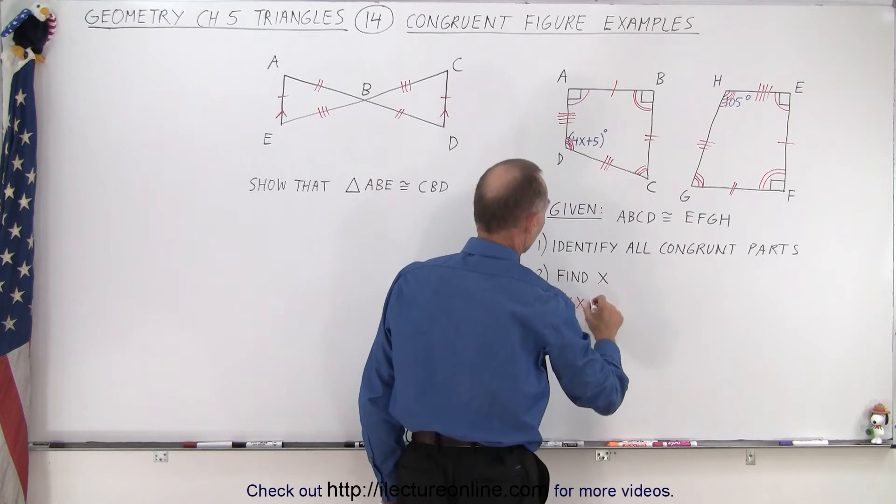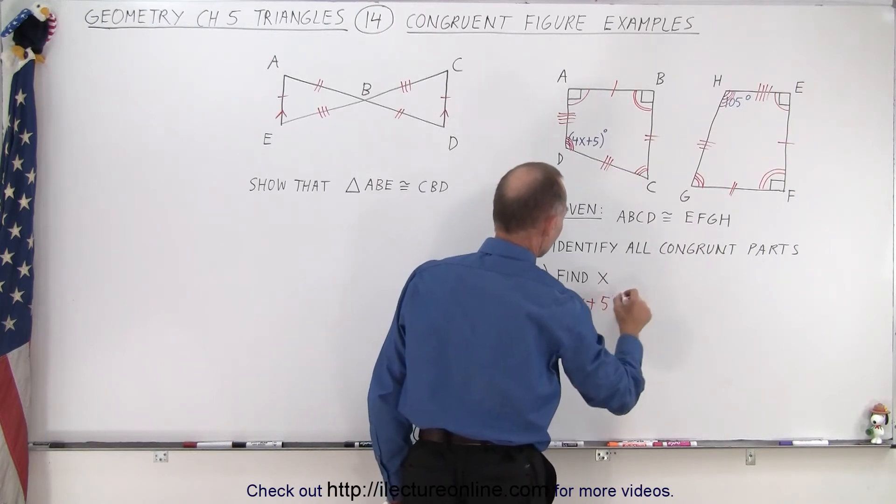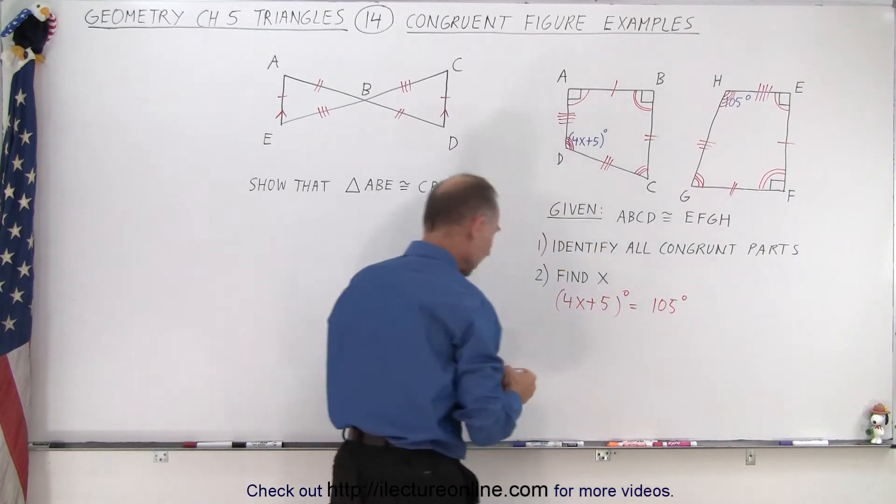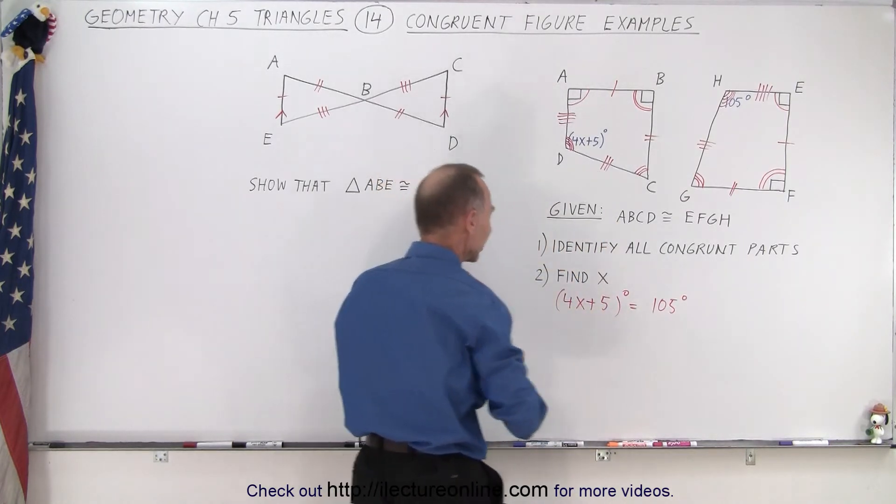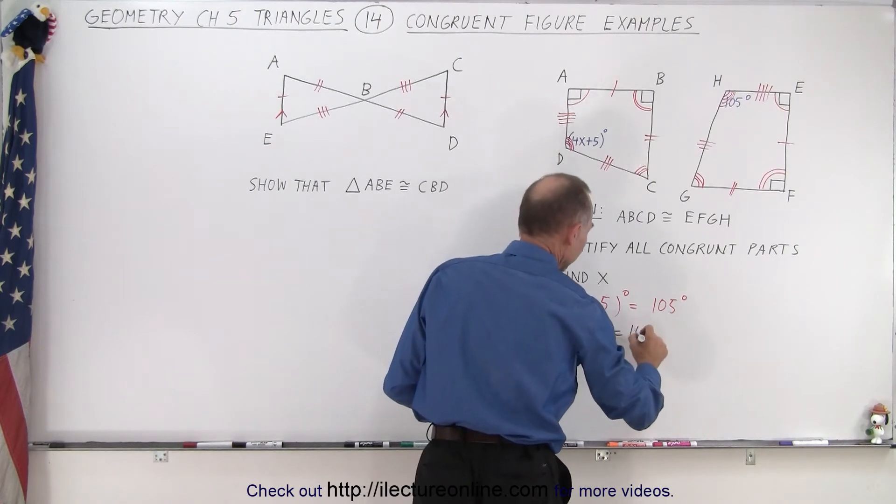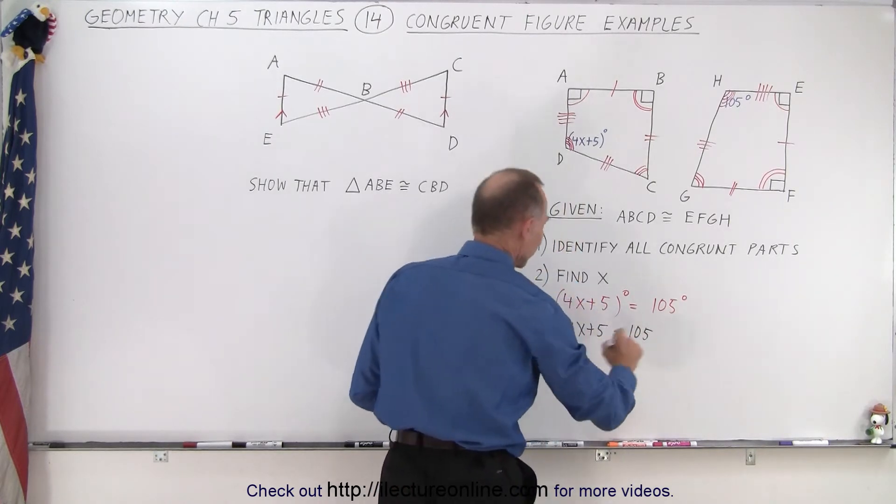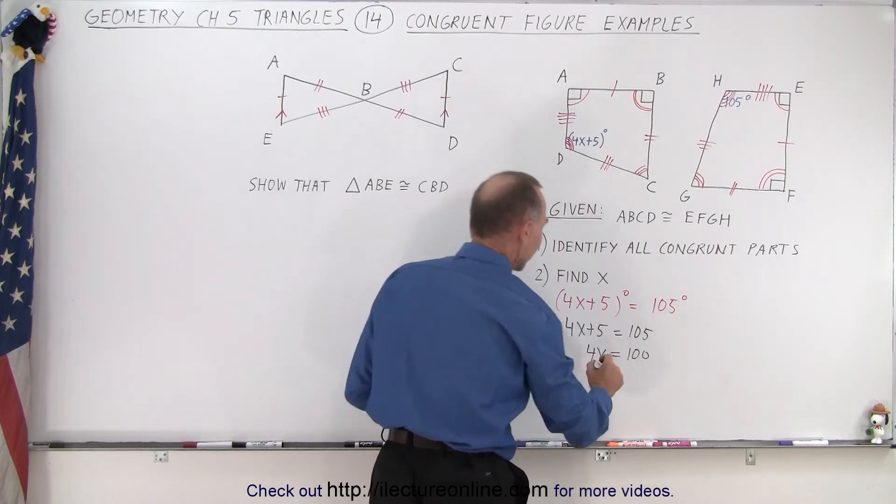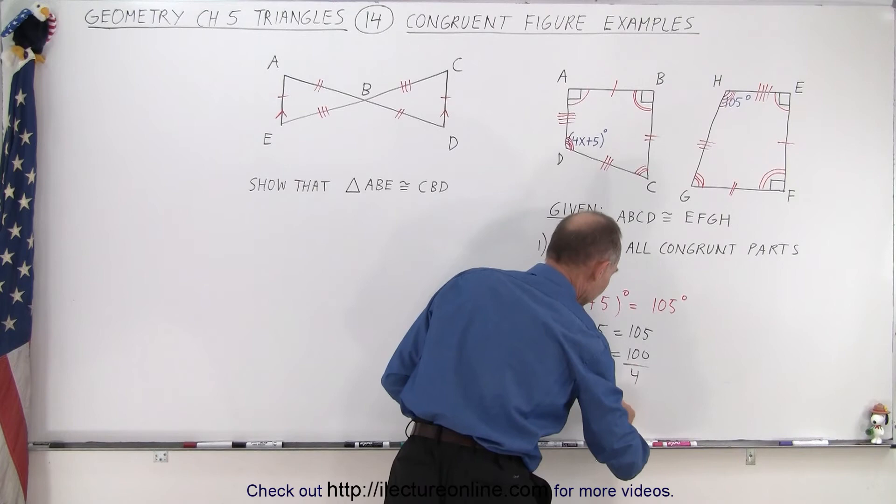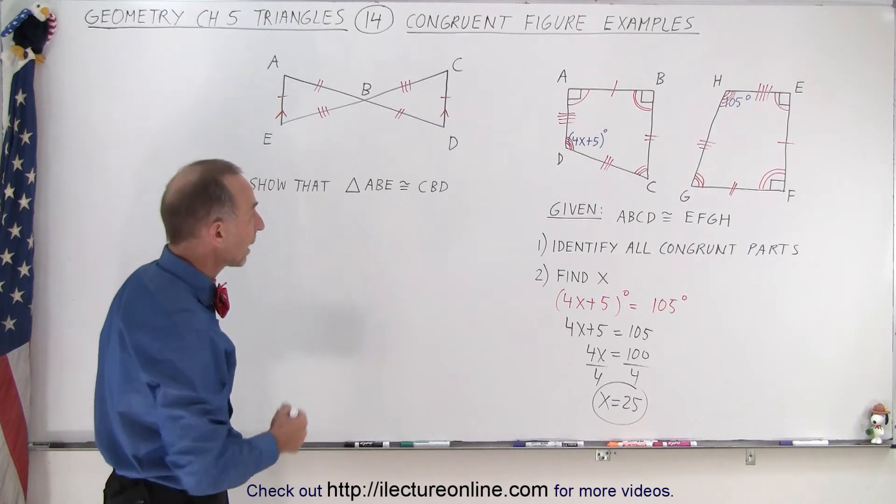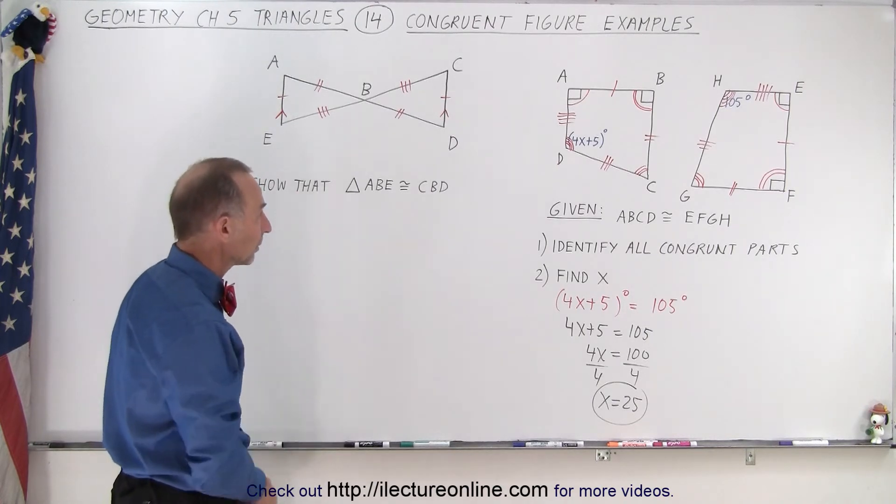If that's true, then we can say that 4X plus 5 must equal 105. Subtract 5 from both sides, that means 4X must equal 100. And then divide both sides by 4. And we get X is equal to 25. So we have the value for X by assuming that angle D is congruent to angle H.